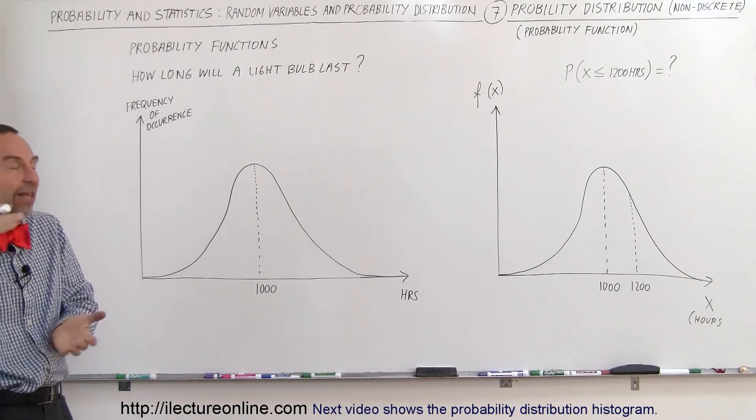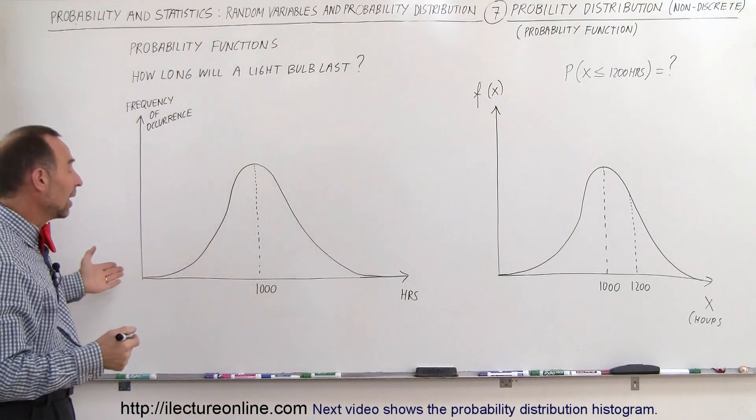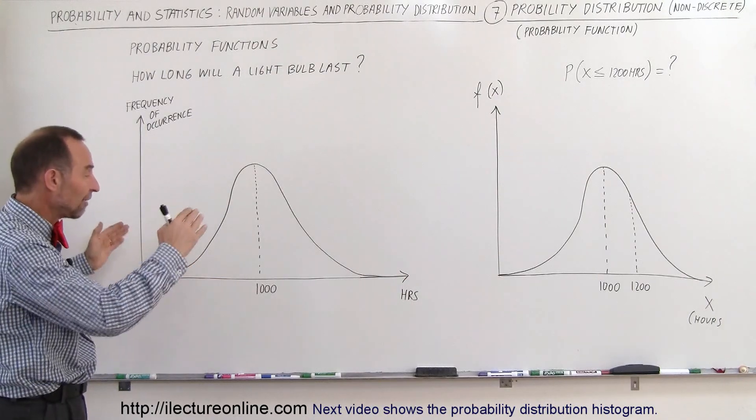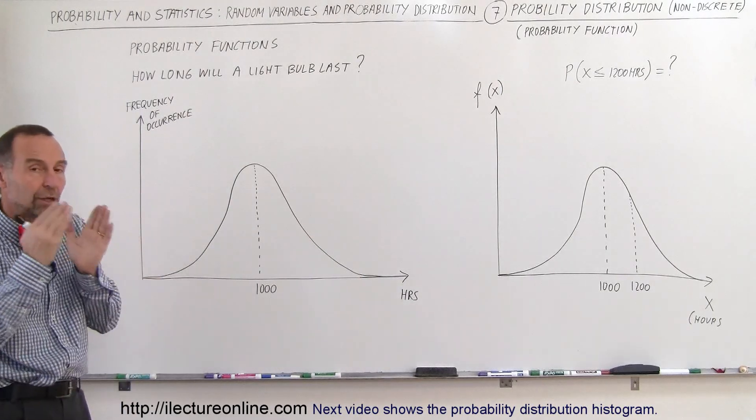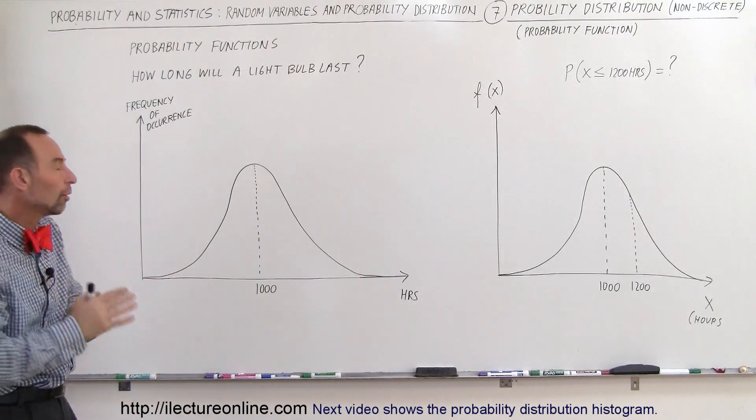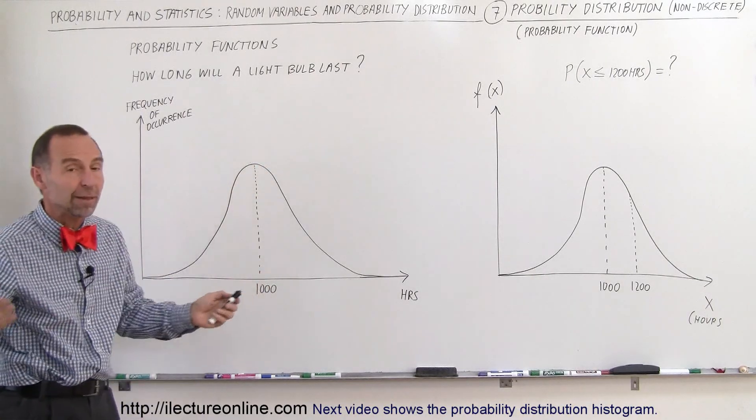So if we were to graph that out, for example, let's say we have a million light bulbs and how long will they last? And if you were to graph them out, the graph would probably look something like this. You see that there's a cluster of them, the great majority of them, that would be somewhere around the expected lifespan of a light bulb of maybe a thousand hours.